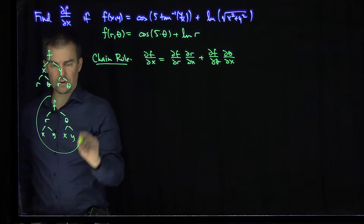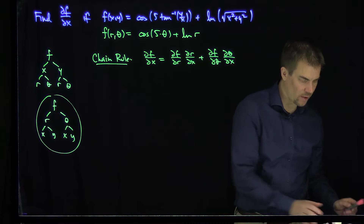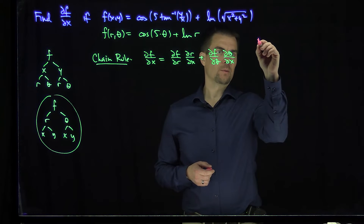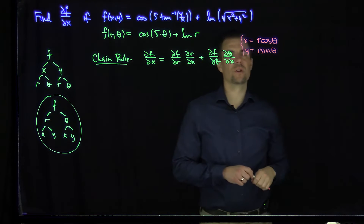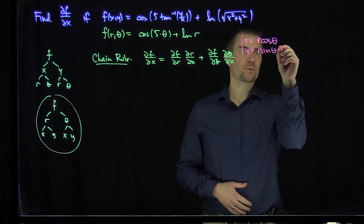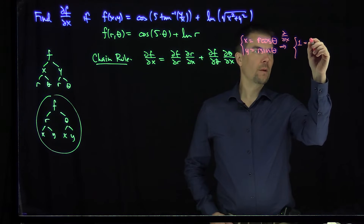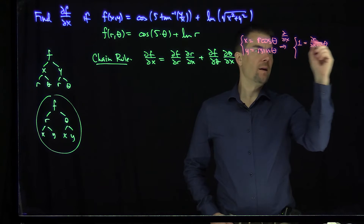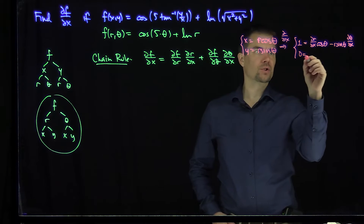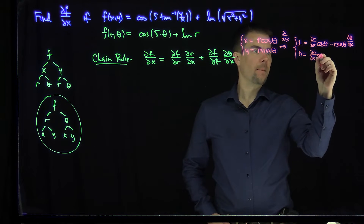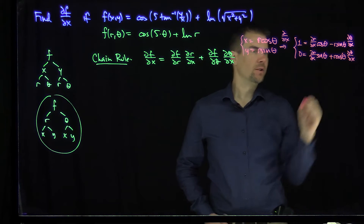So we need to find partial r partial x and partial theta partial x. We'll use implicit differentiation. We know that x equals r cosine theta and y equals r sine theta. Taking d by dx of these equations, we get: 1 equals partial r partial x times cosine theta minus r sine theta times partial theta partial x, and 0 equals partial r partial x times sine theta plus r cosine theta times partial theta partial x.